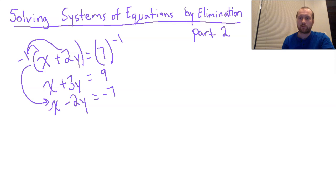Now if I add these together, x minus x is 0, and that eliminates. That's our whole goal when solving systems by elimination. 3y minus 2y is just y, positive y, and 9 minus 7 is 2.